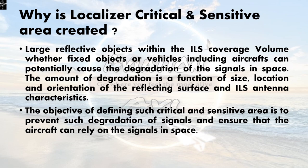Now, why is the localizer critical and sensitive area created? Large reflecting objects within the ILS coverage volume — whether fixed objects or vehicles including aircraft — can potentially cause degradation of the signal in space. The amount of degradation is a function of size, location, and orientation of the reflecting surface and ILS antenna characteristics. Any object in that critical and sensitive area may reflect the frequencies coming from the localizer toward the aircraft. Defining such areas prevents signal degradation and ensures the aircraft can rely on the signals in space.